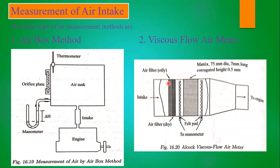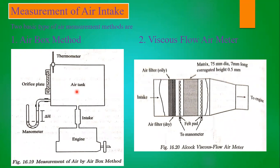For measuring air consumption or air intake, there are two basic methods: the air box method and the viscous flow air meter. The more accurate one is the viscous flow air meter, because in the air box method there is no filtering device, and engine pulsations cause the air intake to vary at different speeds, making accurate measurement difficult.